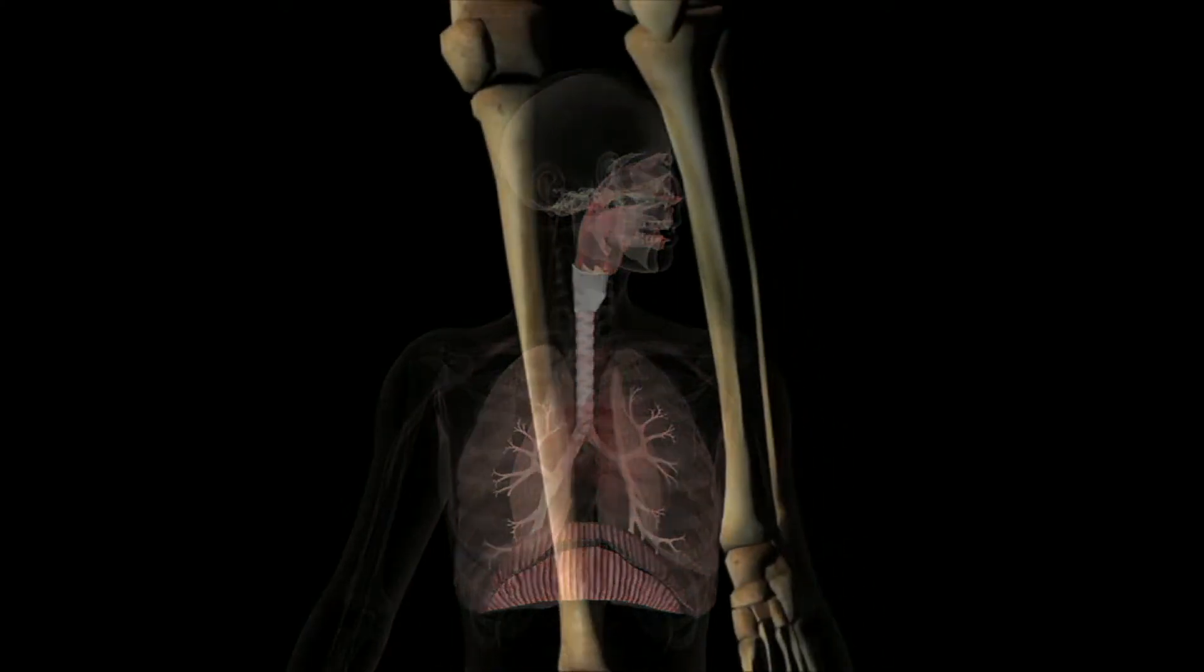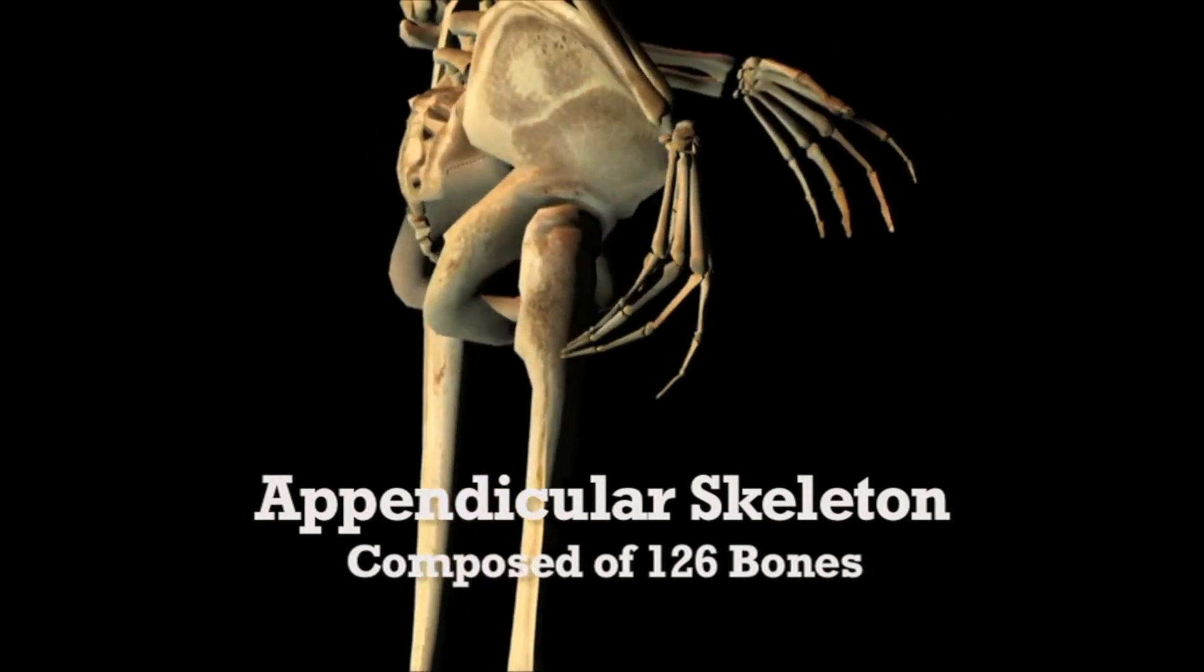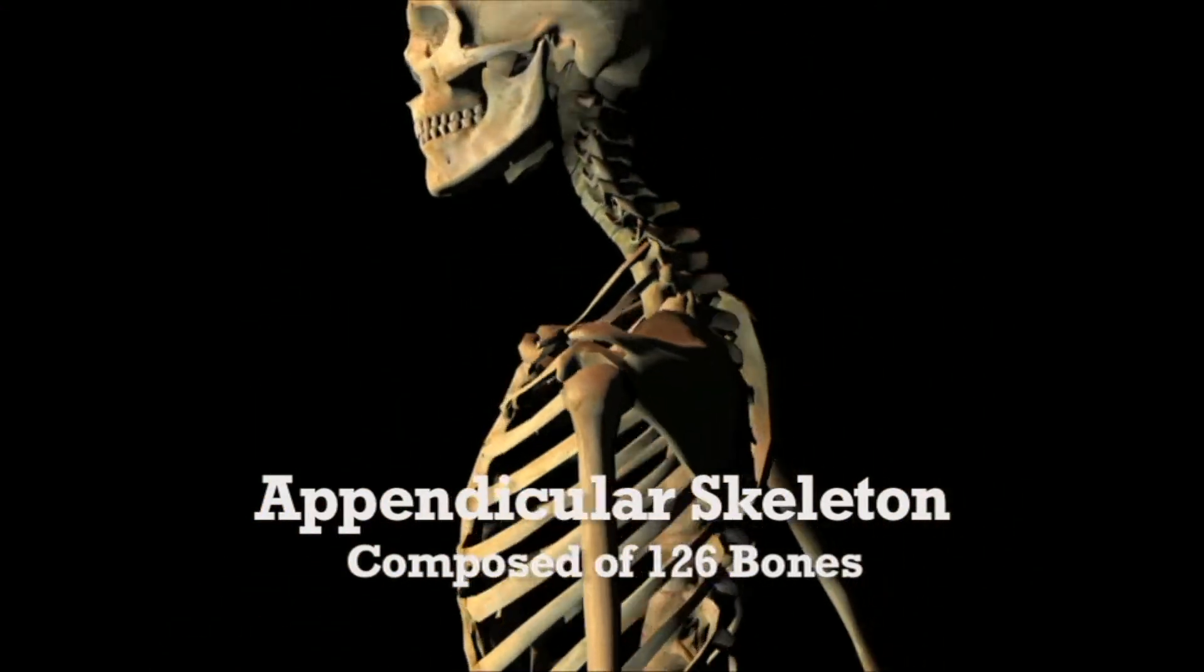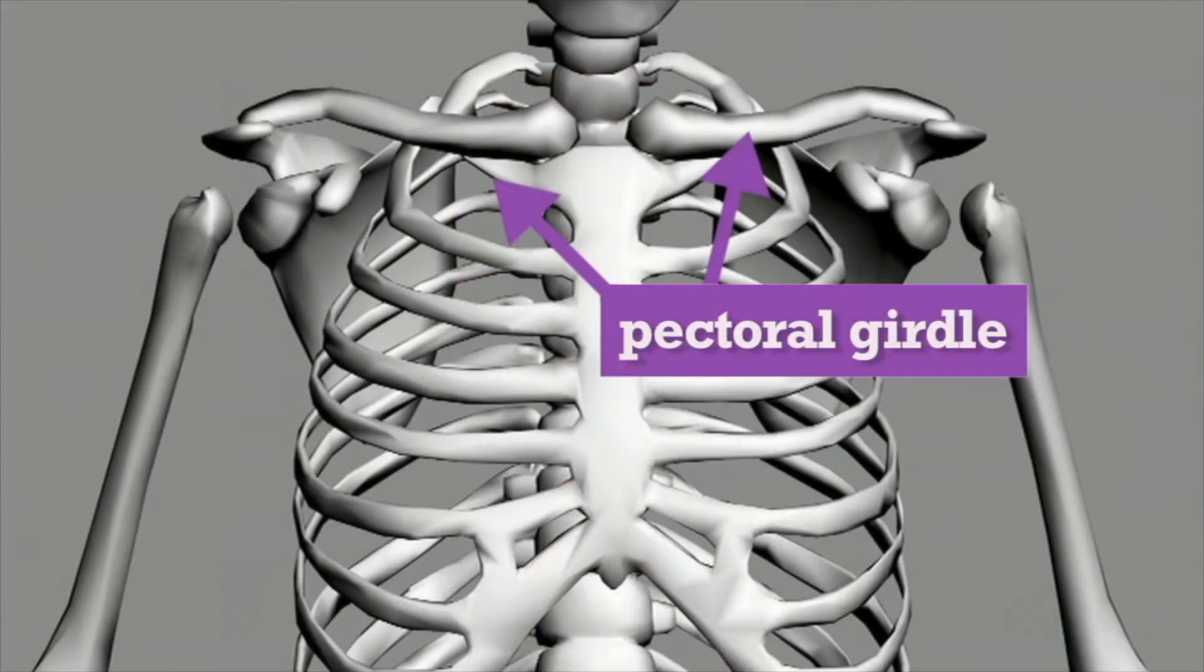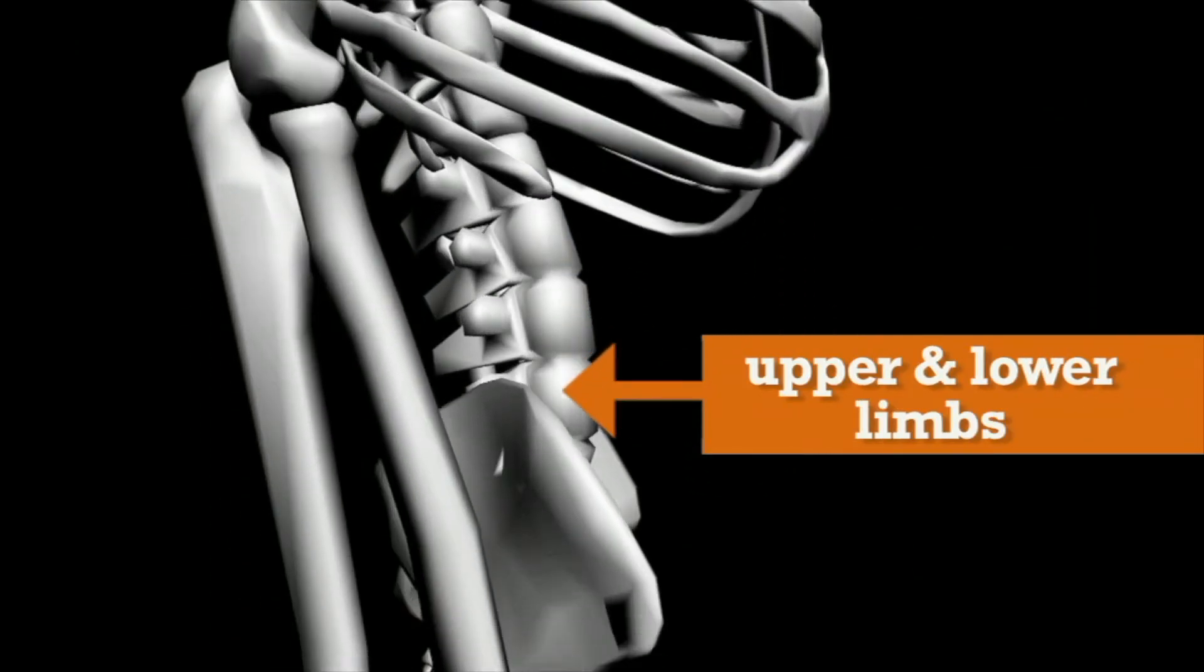The second part of the skeletal system is called the appendicular skeleton. Composed of 126 bones, it includes the pectoral girdle and the pelvic girdle and the upper and lower limbs.